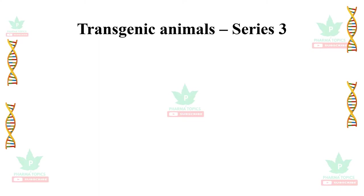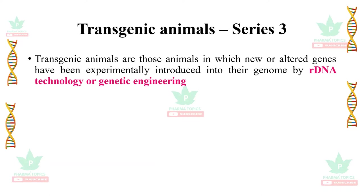Welcome to our Pharma Topics channel. Welcome to the third series of pharmacological and toxicological screening methods, first unit. Series 3 deals with transgenic animals. Transgenic animals are those animals in which new or altered genes have been experimentally introduced into their genome by recombinant DNA technology or genetic engineering.